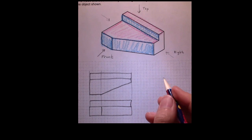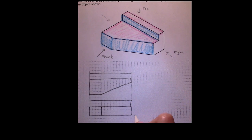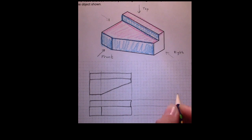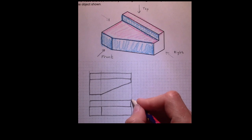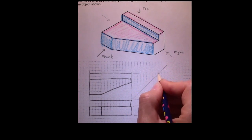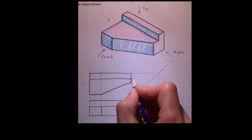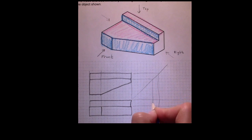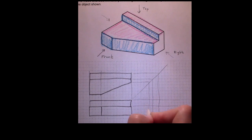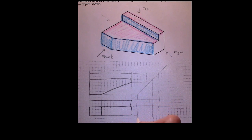The right side view is going to be horizontally aligned with the front view. And then we're going to create a 45-degree angle projector and project over and down from the top view. This gives us a nice little area where our right side view is going to go.